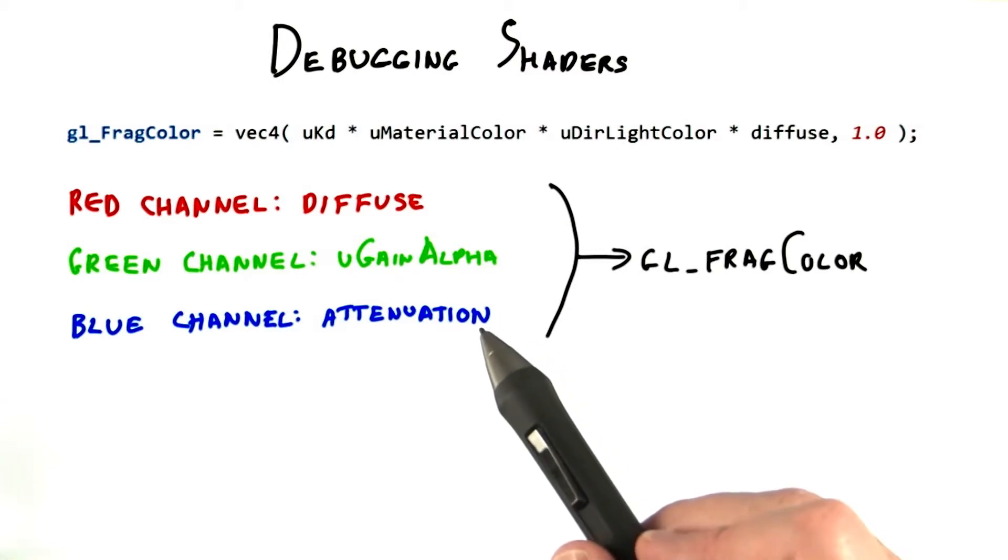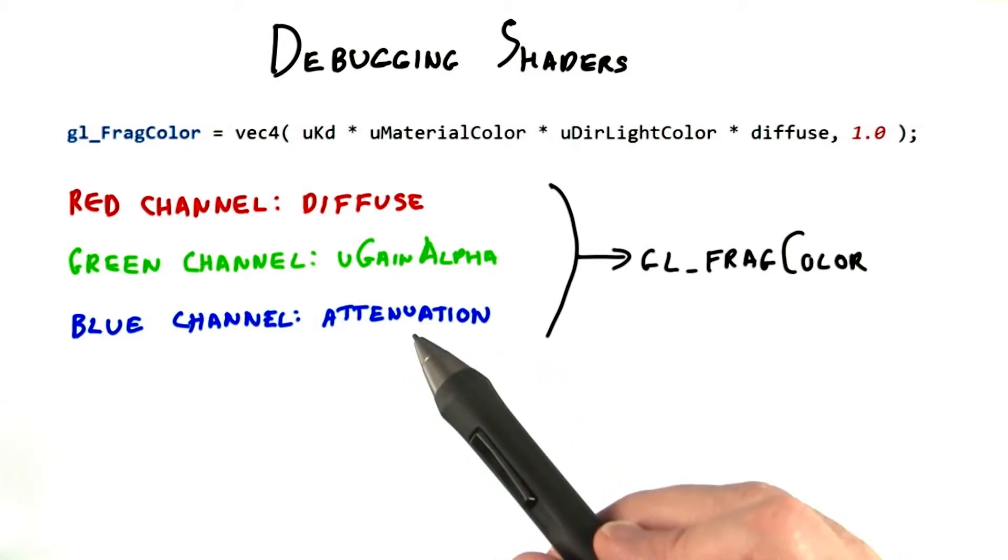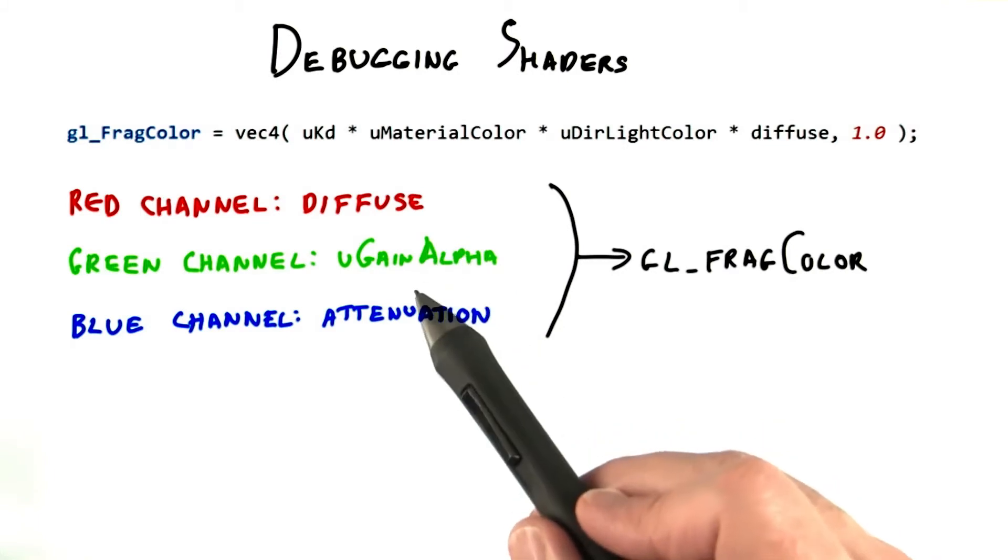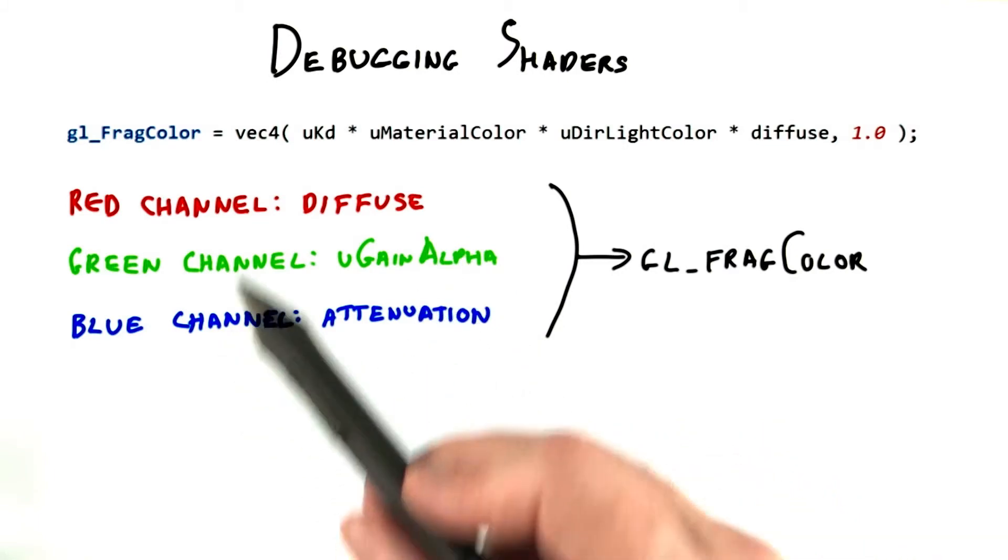In fact, you have three whole color channels to use and view on the screen. Your task is to send the following program values: diffuse, uGainAlpha, and attenuation to each of these channels.